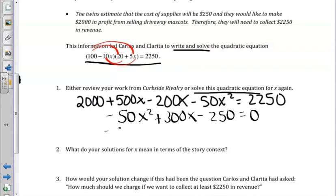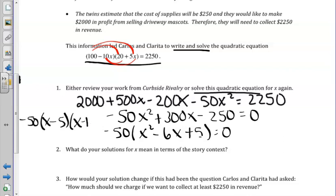At this point, we factored out a negative 50, and we are left with x squared minus 6x plus 5 equals zero. So when we were asked to solve this before, keep in mind we did then factor what was in parentheses. We kept the negative 50 on the outside, and we factored this into x minus 5 and x minus 1.